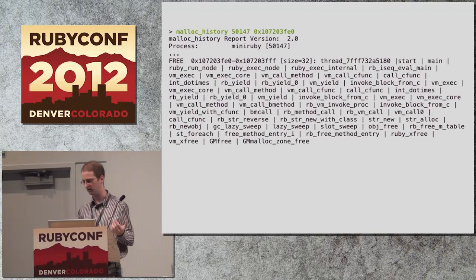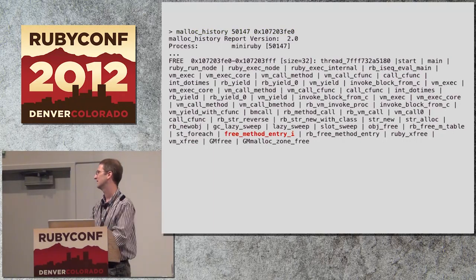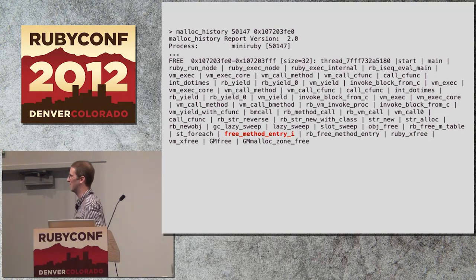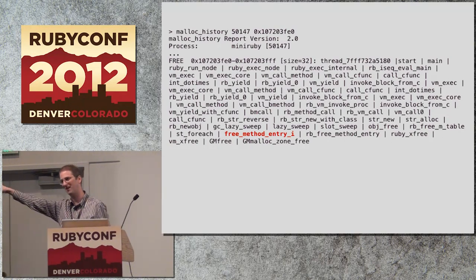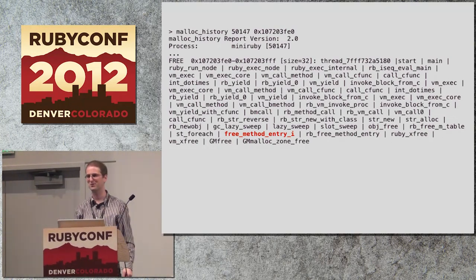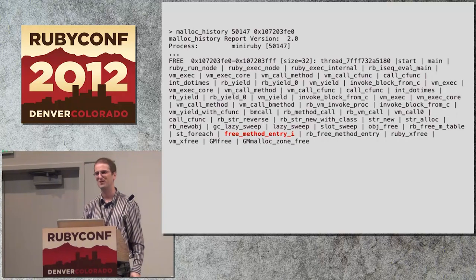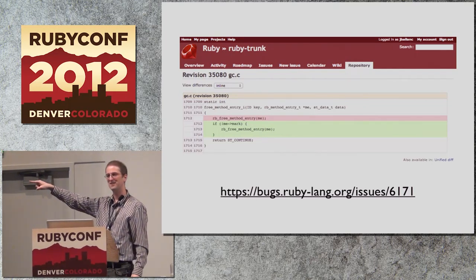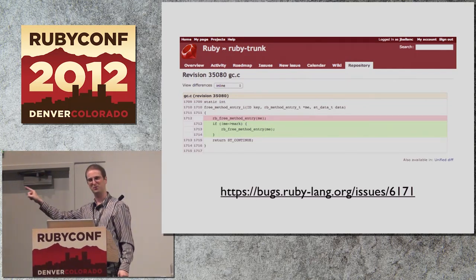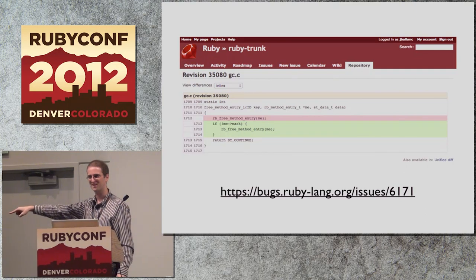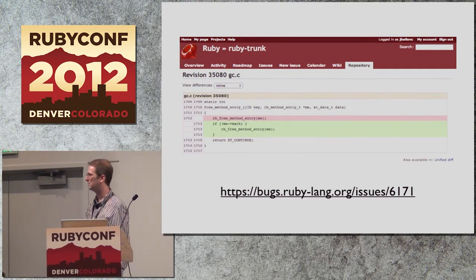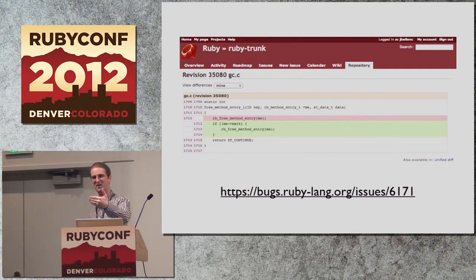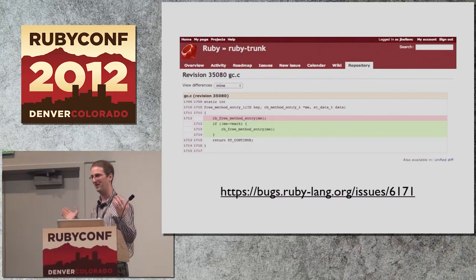We have a memory address that's been inappropriately touched, and our process ID. So we run malloc_history, pass the process ID and memory location, and it tells us the last time that it was freed. Somebody freed this memory before they should have, because the GC mark phase is attempting to mark it as still in use — but it's already been freed. Who was it? Turns out it's free_method_entry_i. If you look at the source for free_method_entry_i, turns out it's one line. It should've been three lines — because it didn't check whether the method entry it was freeing was already marked. All you have to do is add that guard so we don't free method entries already marked by the GC, and the bug goes away.